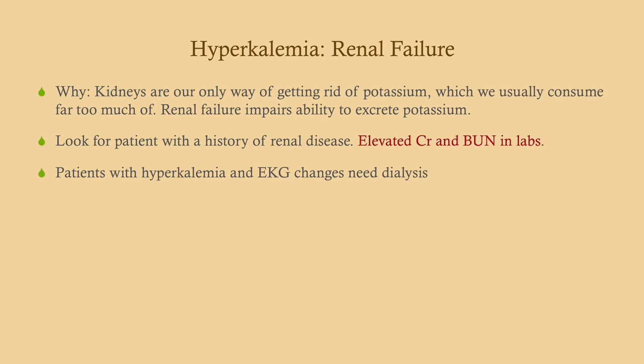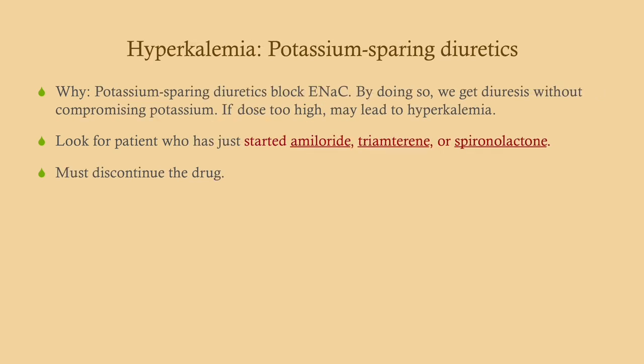In renal failure, the kidneys are the only way of getting rid of excess potassium, so renal failure impairs that. Look for a patient with a history of renal disease or predisposing conditions — the two most common causes of chronic kidney disease are hypertension and diabetes. On labs, look for elevated creatinine and BUN. If a patient has hyperkalemia with EKG changes and renal insufficiency, you should really send them for dialysis.